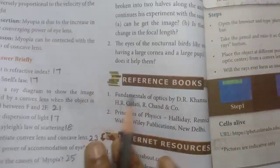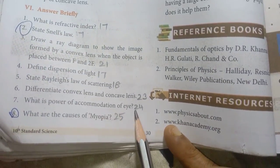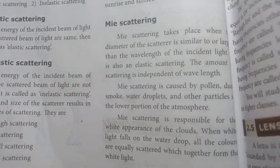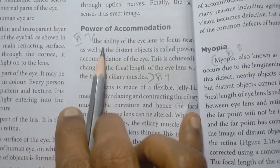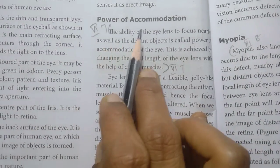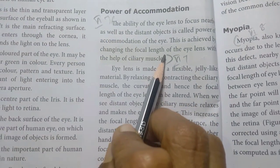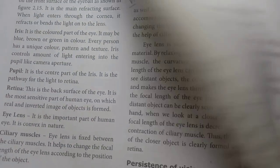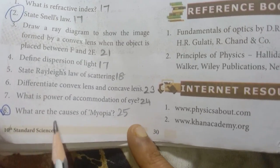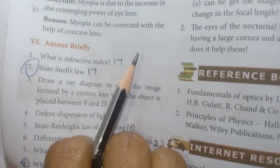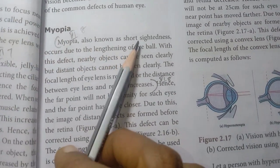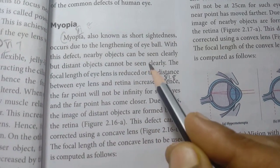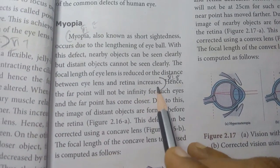Question 7 — what is the power of accommodation of the eye? Page number 24. Power of accommodation heading, first paragraph: the ability of the eye lens. Also refer to the paragraph on ciliary muscles. Question 8 — what are the causes of myopia? Page number 25. Myopia, also known as short-sightedness, first paragraph, sixth line — the retina increases.